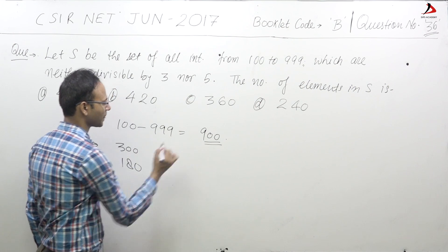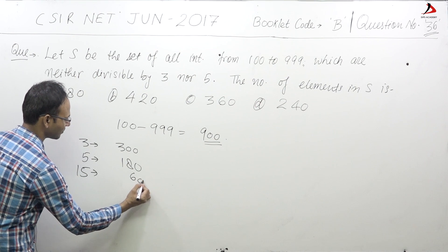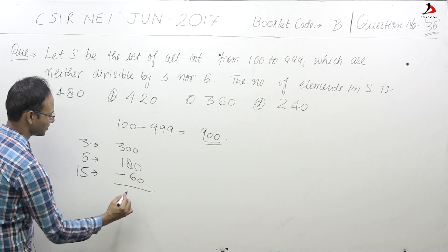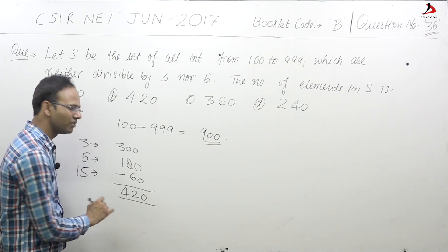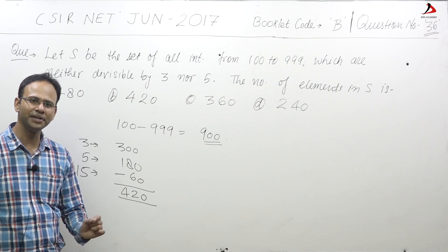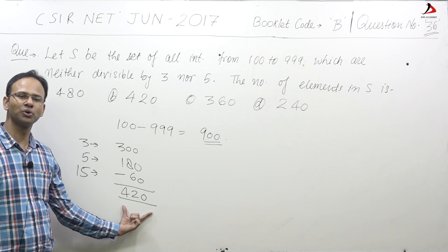If you divide this number by 15, you will get 60. So total will be 420 numbers. Total will be having 420 numbers which are the multiples of 3 or 5.